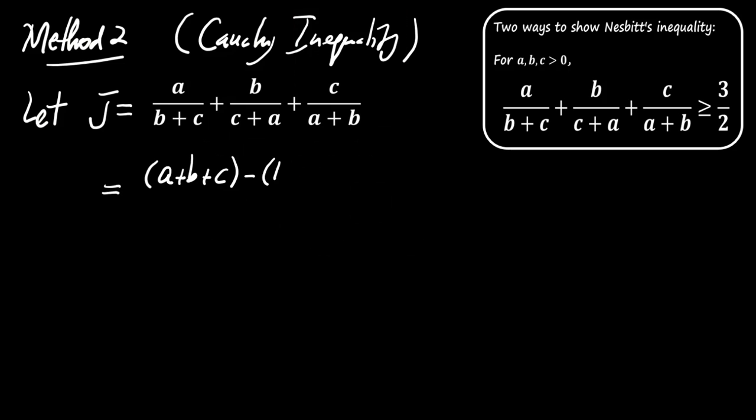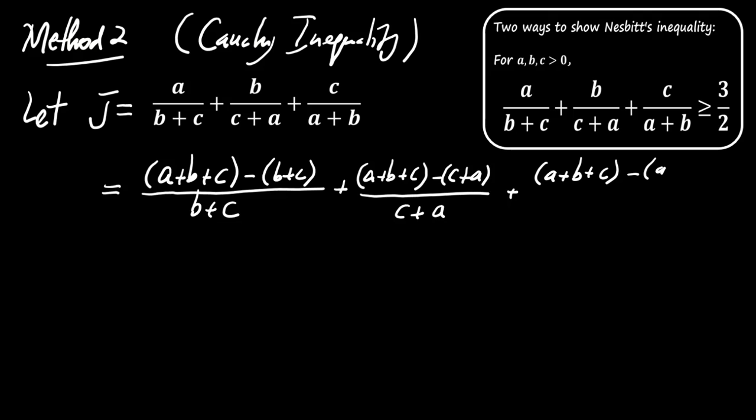A over B plus C equals A plus B plus C minus B plus C, all divided by B plus C. This simplifies to A over B plus C equals A plus B plus C over B plus C minus 1.